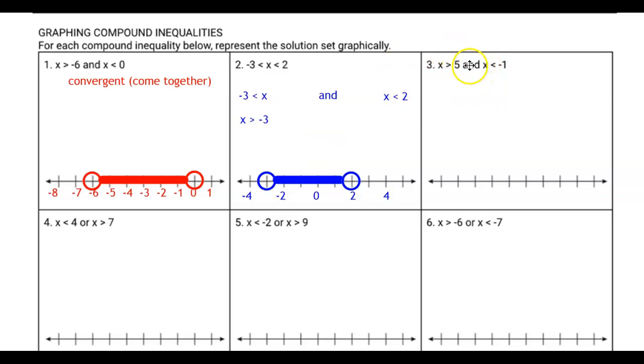Take a look at question three, another and inequality. This one didn't say and in the problem, but we know that since the x is directly in between the two numbers, we consider it an and inequality as well. The only time it's going to mean or inequality is when it specifically says or. These three are or inequalities, but let's not get ahead of ourselves. Let's do number three first.